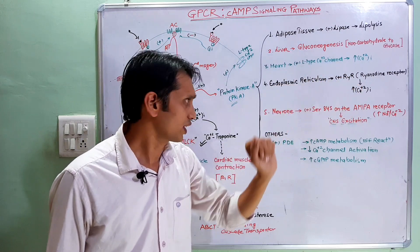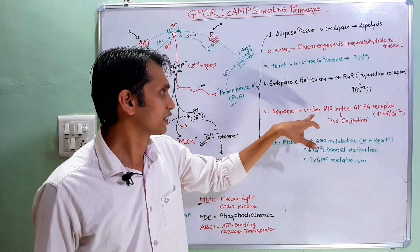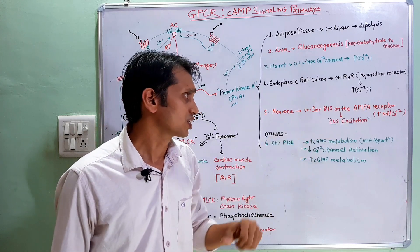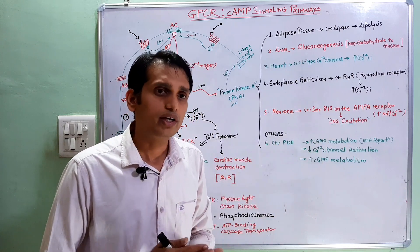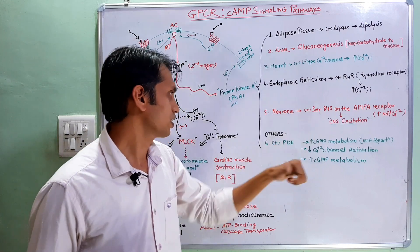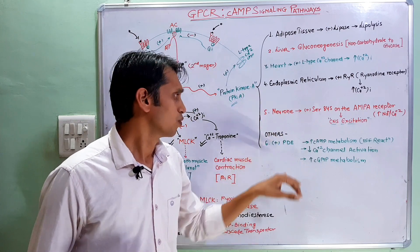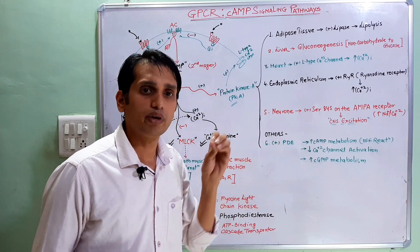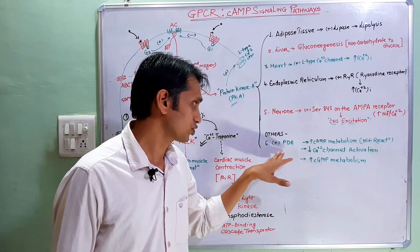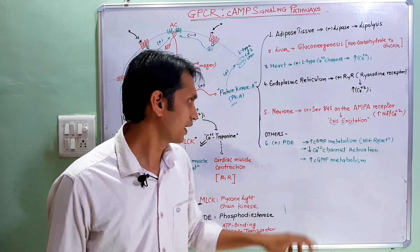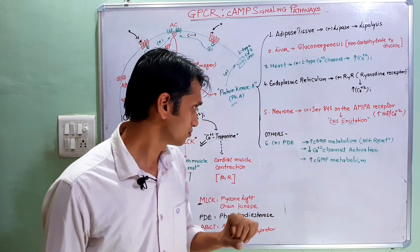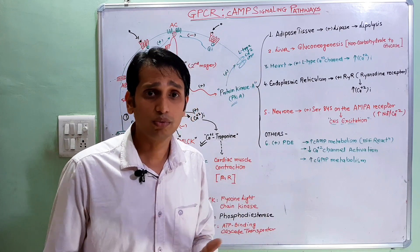In the endoplasmic reticulum, protein kinase A activates ryanodine receptors, causing accumulation of calcium ions. In neurons, it activates the AMPA receptor GluA1 protein, causing CNS excitation — this is the stimulatory receptor. Additionally, protein kinase A activates phosphodiesterase enzyme, which is responsible for the metabolism of cyclic AMP or cyclic GMP. Activation of phosphodiesterase increases cyclic AMP metabolism and decreases calcium ion channel activation.